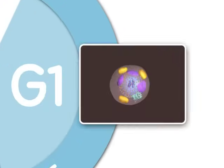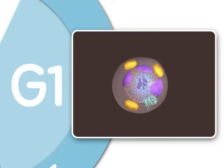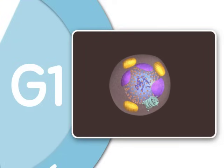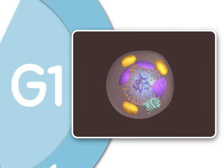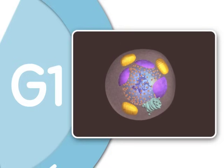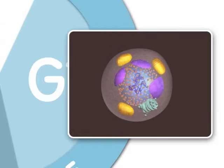G1, or Gap1, is the first growth stage of interphase. In G1, the cell grows to nearly its full size and performs many of its specific biochemical functions that aid the organism.